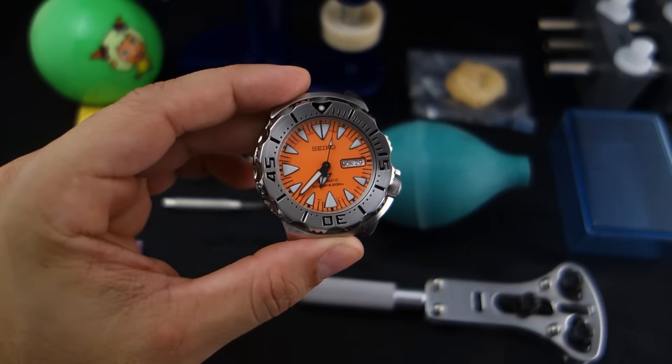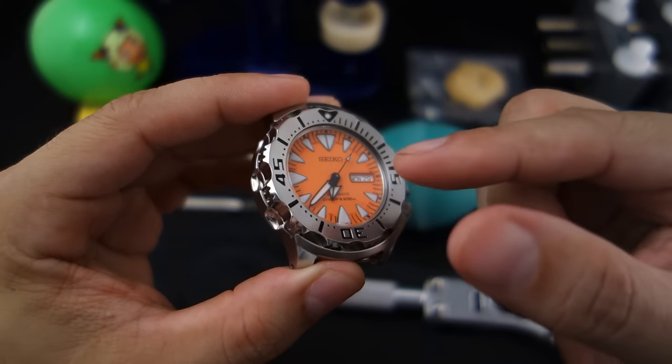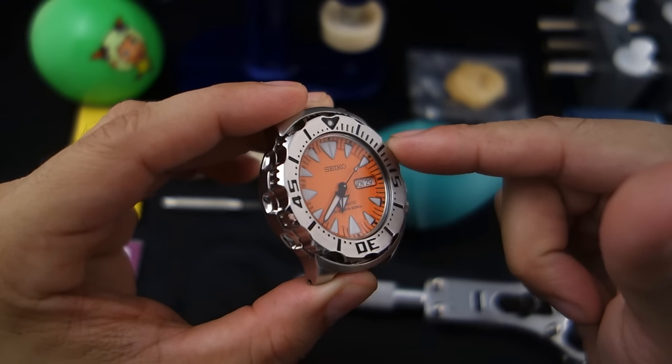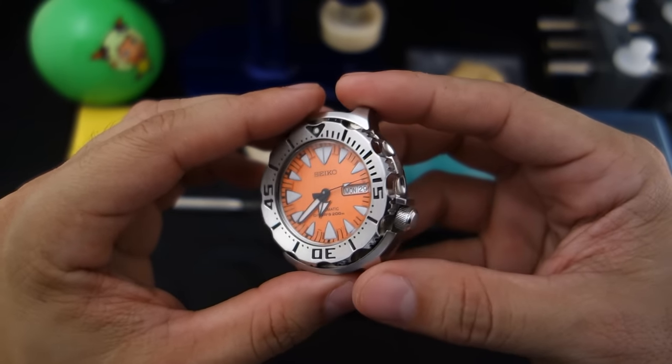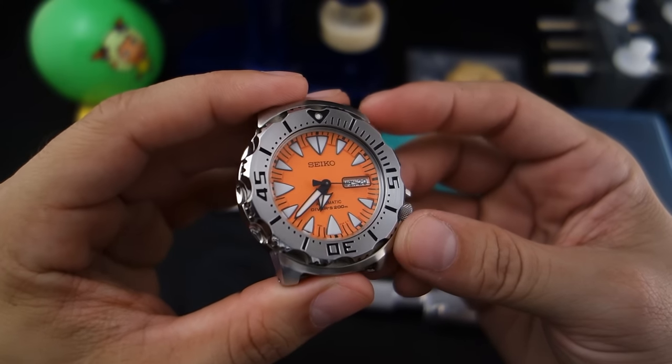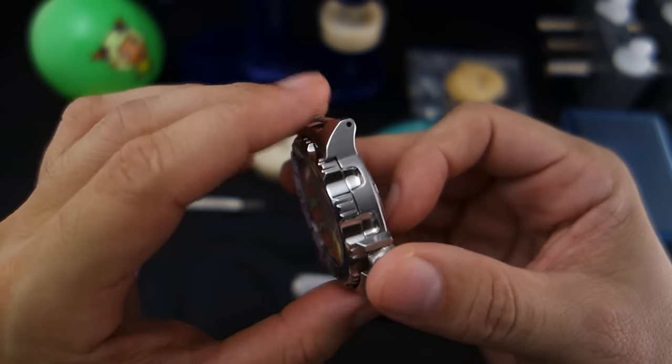Hey guys, welcome back to Minute Watch. Like the title implies, we're gonna change the crystal out of this Seiko Orange Monster, the generation 2 Orange Monster SRP 309. I'm addicted, super addicted to crystal swaps right now.